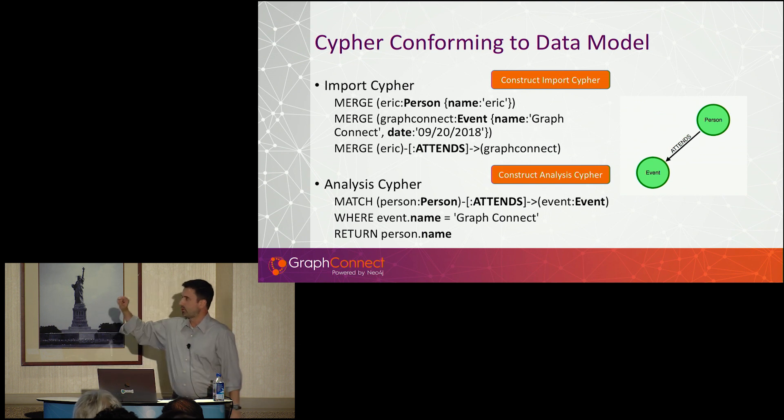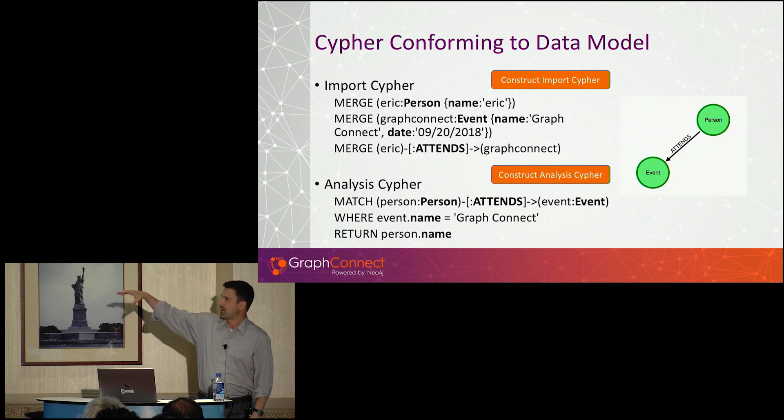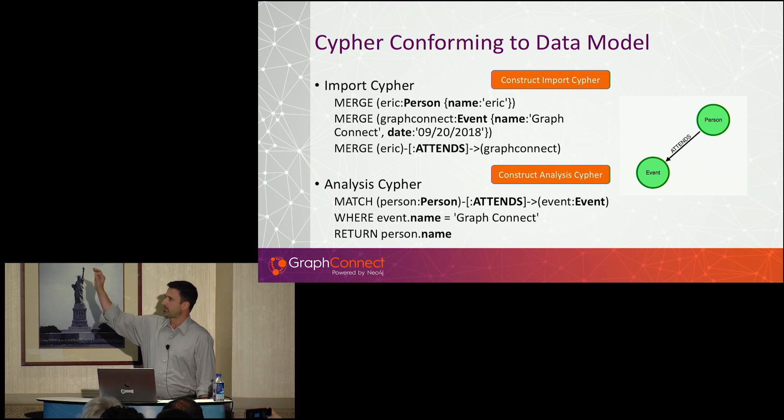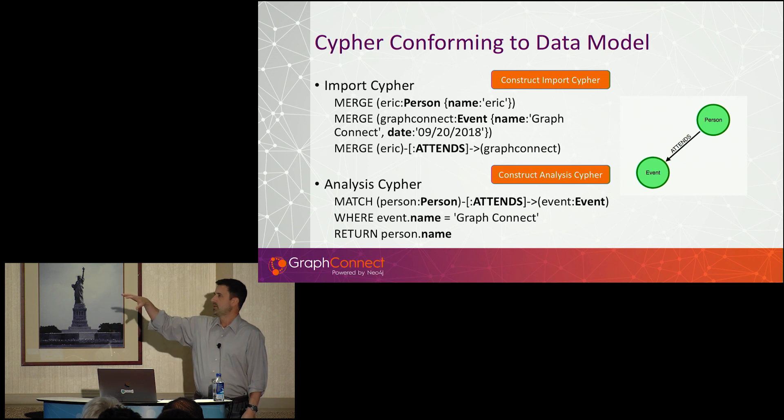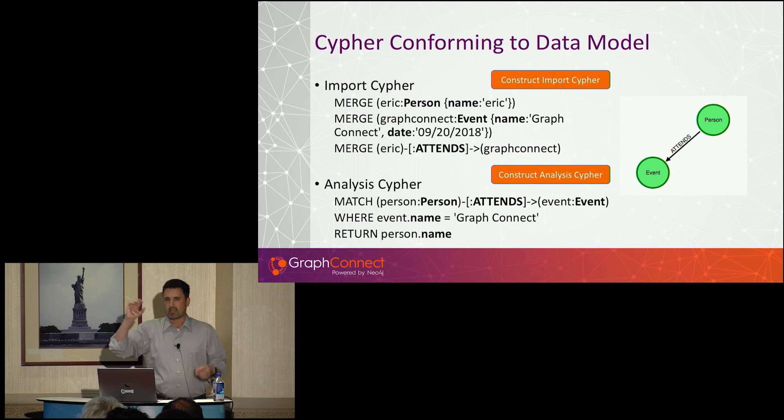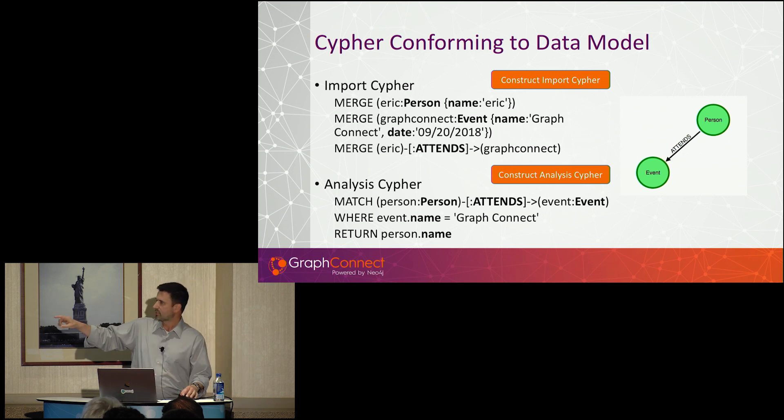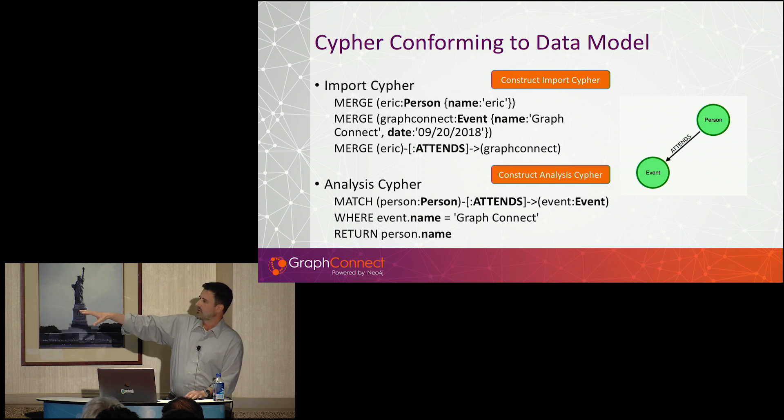Here's just to look at an example of the import and the analysis Cypher. Here we have import Cypher where I'm importing myself as a node. You see everything that's in bold - this is the part of the Cypher statement which is appropriate to the data model. So Eric is a person, I have a property name. GraphConnect is an event. Eric attends GraphConnect. And at the end here, when I want to pull data back out, I'm using those same things - person, attends, event, and the name properties to pull out. So you see this interplay between the import side and the analysis side.